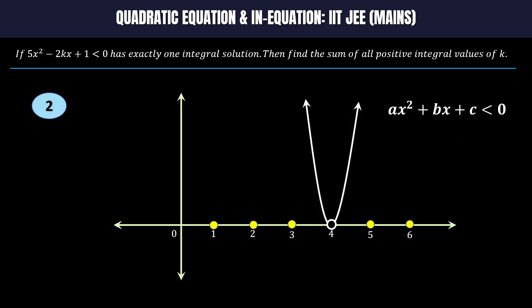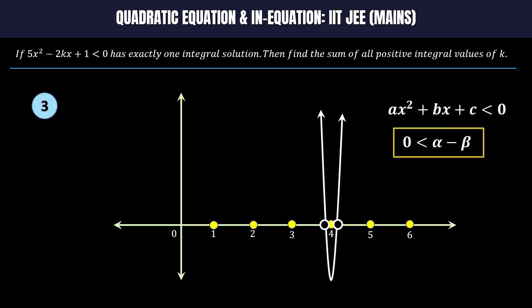The second graph tells us that α and β must not be the same number. This leads to the conclusion of the lower bound of α - β through graphs 3 and 4, that is α - β must be greater than 0.